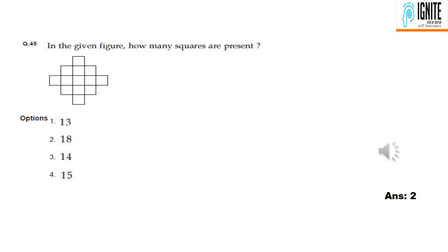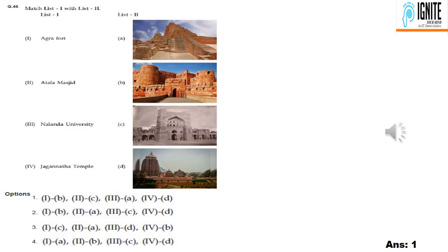Question 45: how many squares are present? We have a 3x3 matrix. We count 1² + 2² + 3² squares. So we have 14 squares plus 4 squares, totaling 18 squares. Option 2 is the answer.